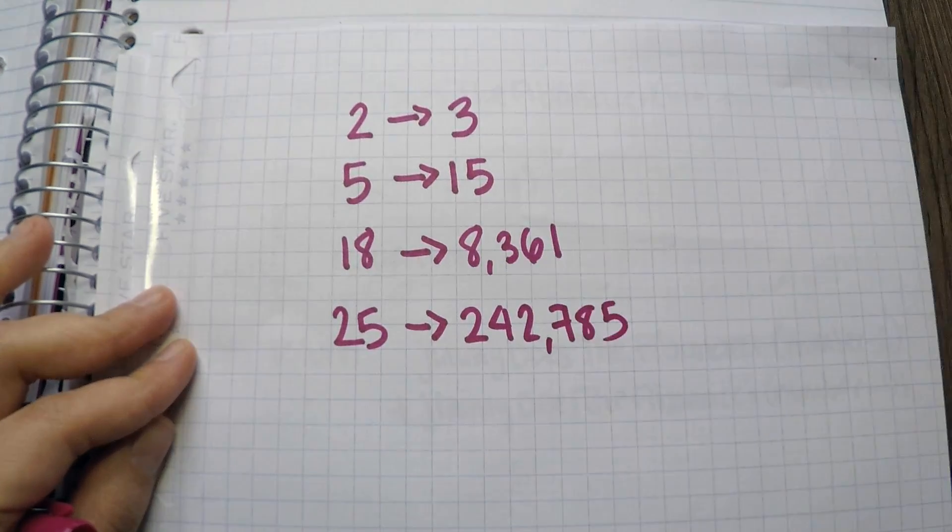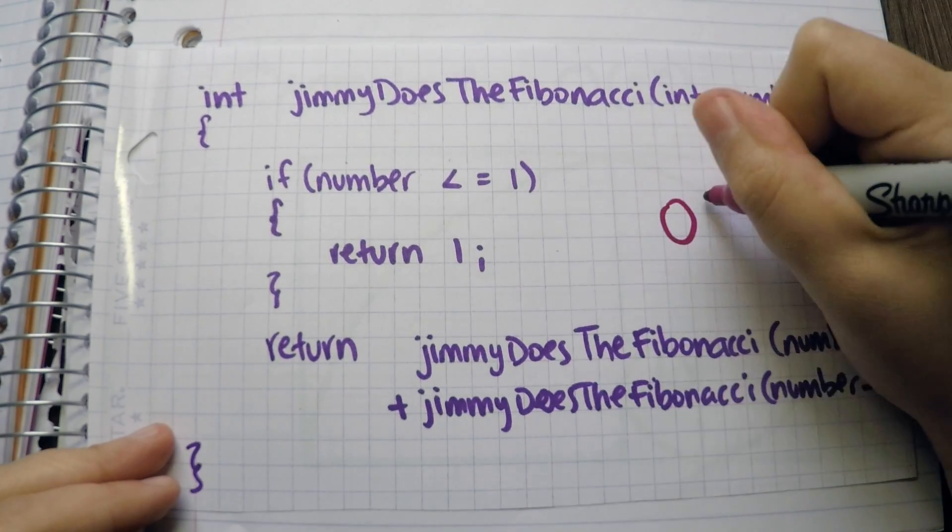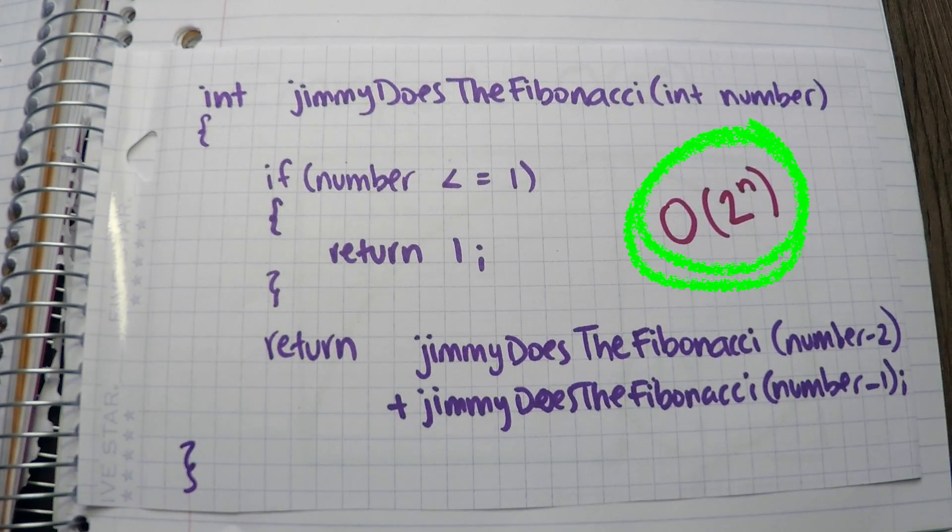25, 242,785 times. See how fast my number grew? This is O(2^n).